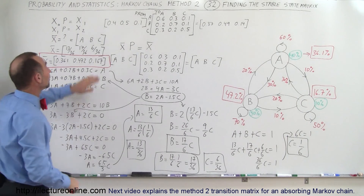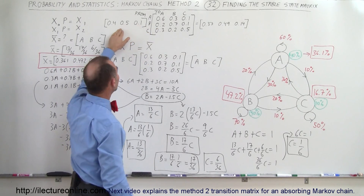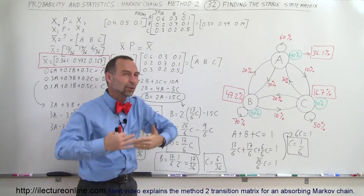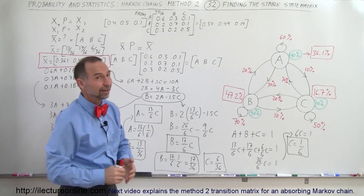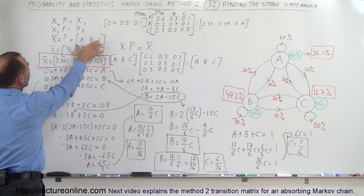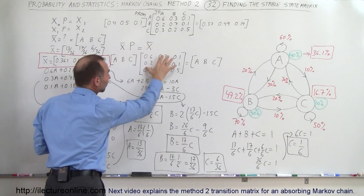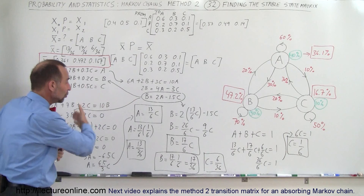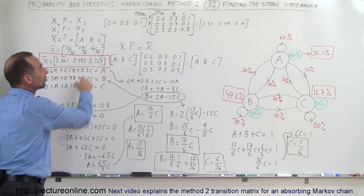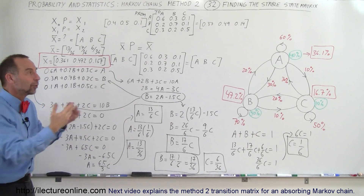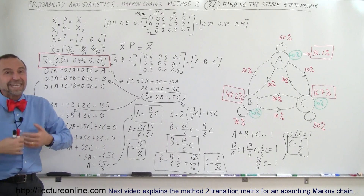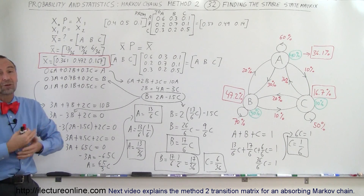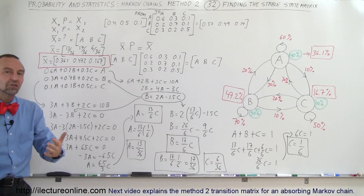Quick review: you have the initial matrix and the transition matrix. Multiplying the initial matrix times the transition matrix gives the first state; do it again for the second state, the third state, and so on until you reach the final stable state. A better way is to call the stable state A, B and C, multiply it times the transition matrix and set it equal to the stable state, then solve for the three elements through algebra. This Markov chain method tells you what's going to happen in the future based upon the current state and how transitions between states occur.